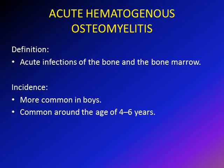Acute hematogenous osteomyelitis is the most common form of osteomyelitis in children. It is defined as an acute infection of the bone and bone marrow, and it is more common in boys between the ages of four to six years.